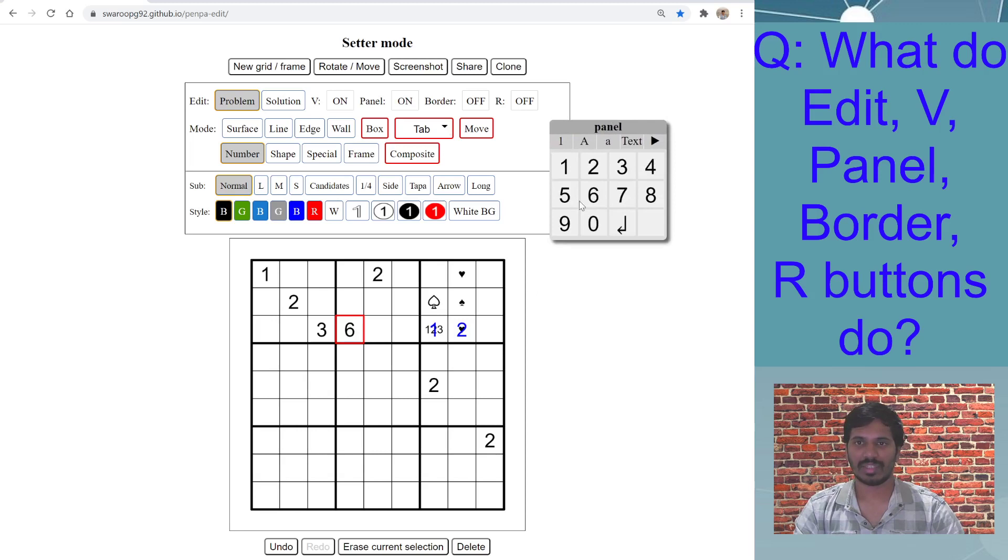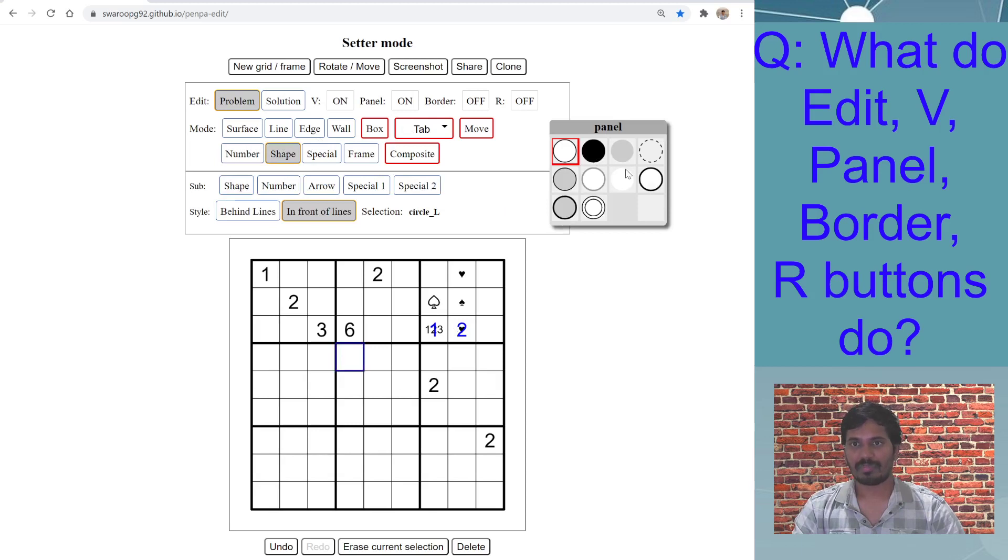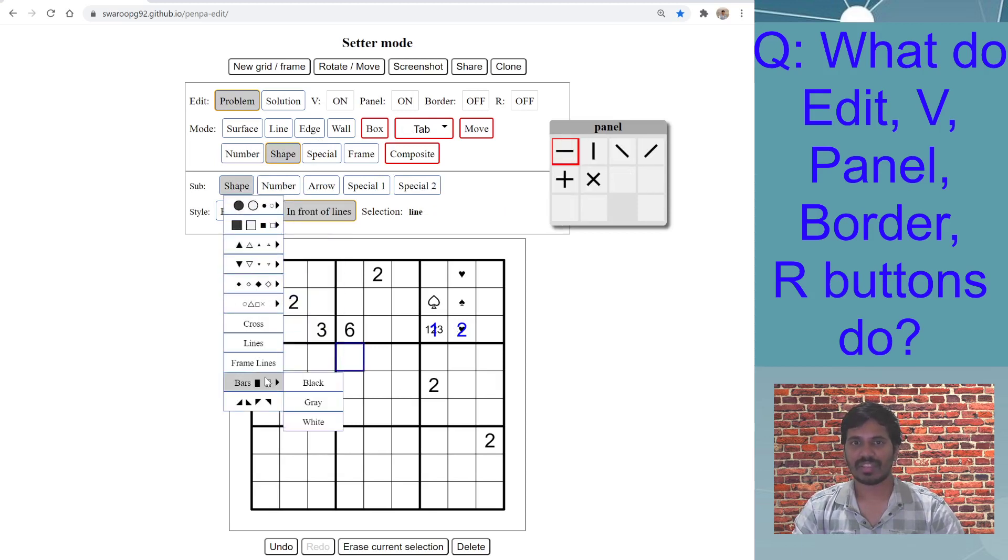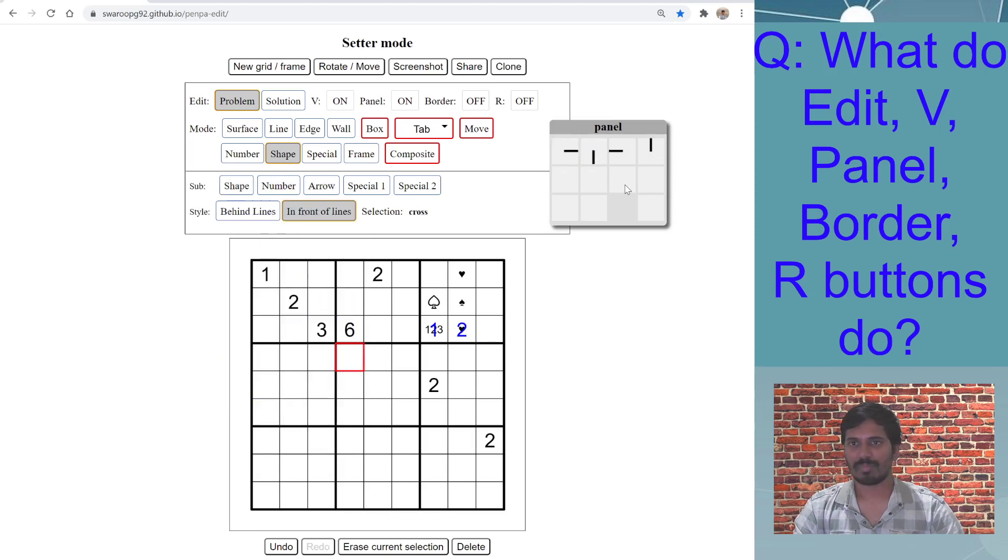And then in the shape mode, it provides different shapes. You have so many shape options you can select, and all those options appear on this panel window. So it's useful—Panel button on/off is useful for number and shape mode.